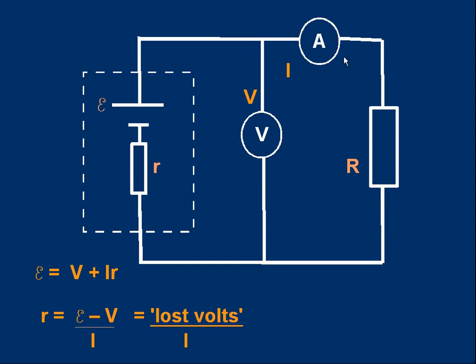The ammeter must be in series with the resistor. Note that a good ammeter has a zero or virtually zero resistance. So the ammeter has no effect on the circuit's behavior.